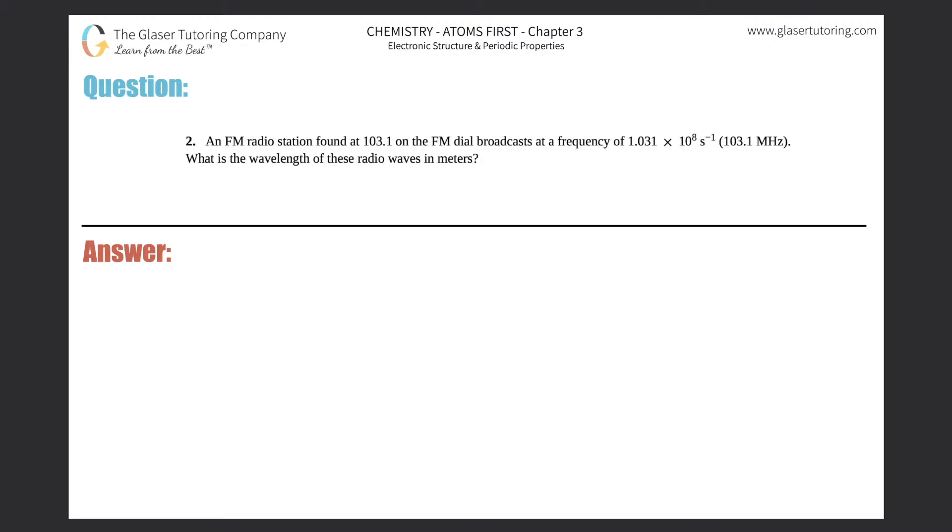Number two. An FM radio station found at 103.1 on the FM dial broadcasts at a frequency of 1.031 times 10 to the eighth per second, which is 103.1 megahertz. What is the wavelength of these radio waves in meters?